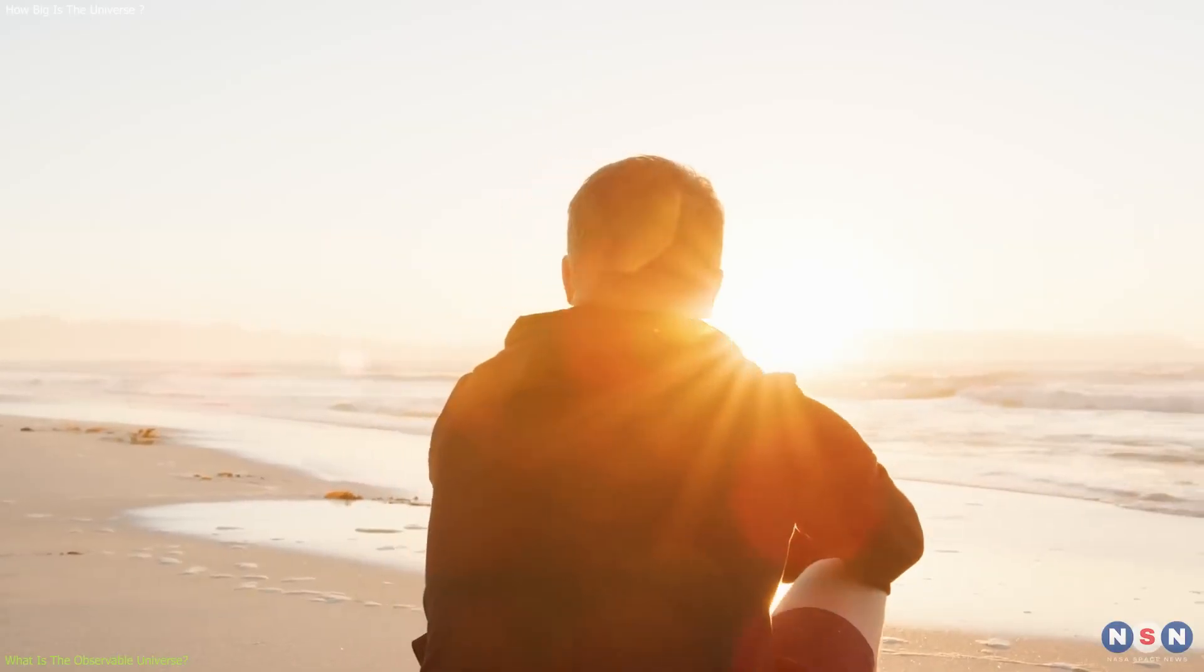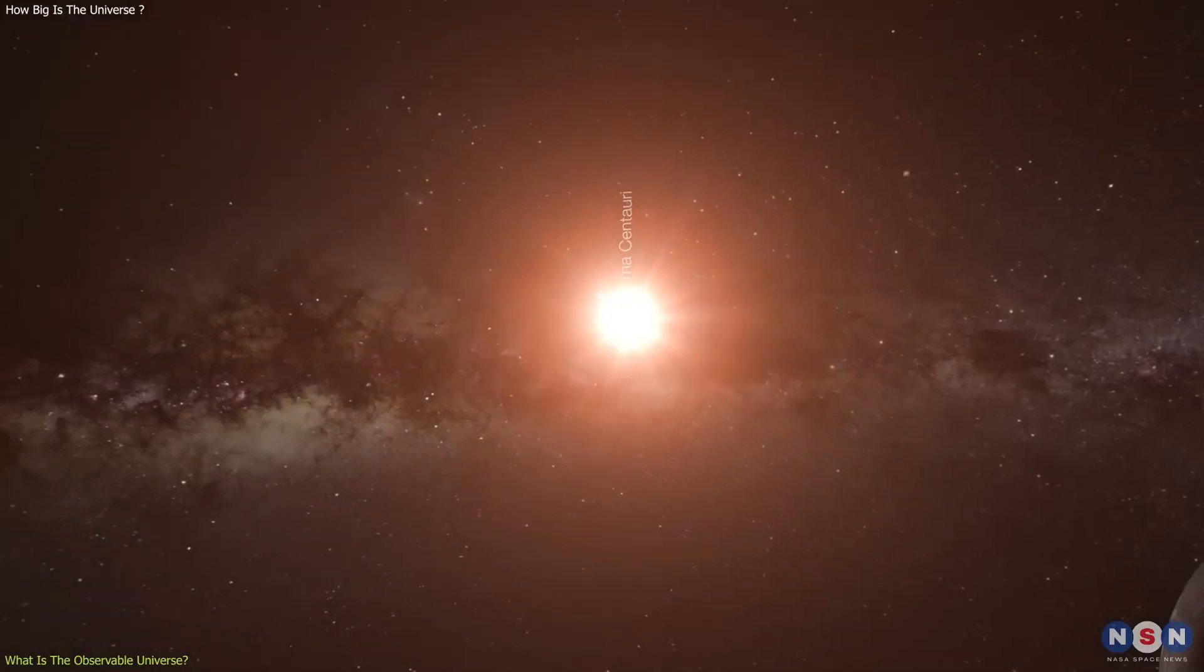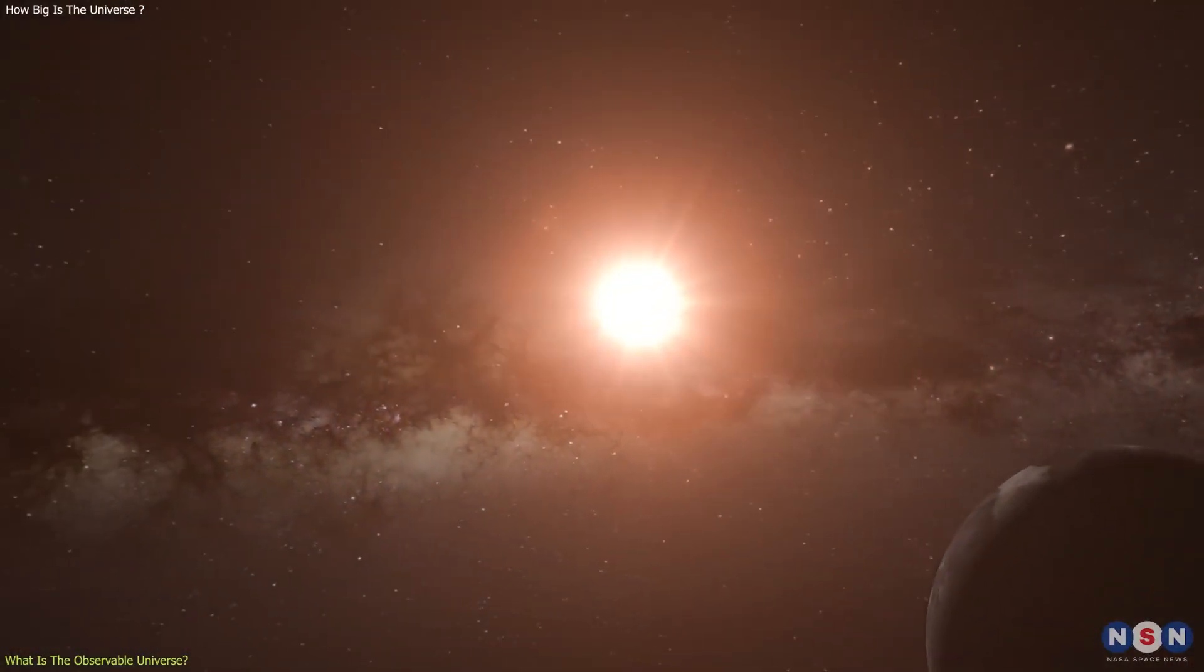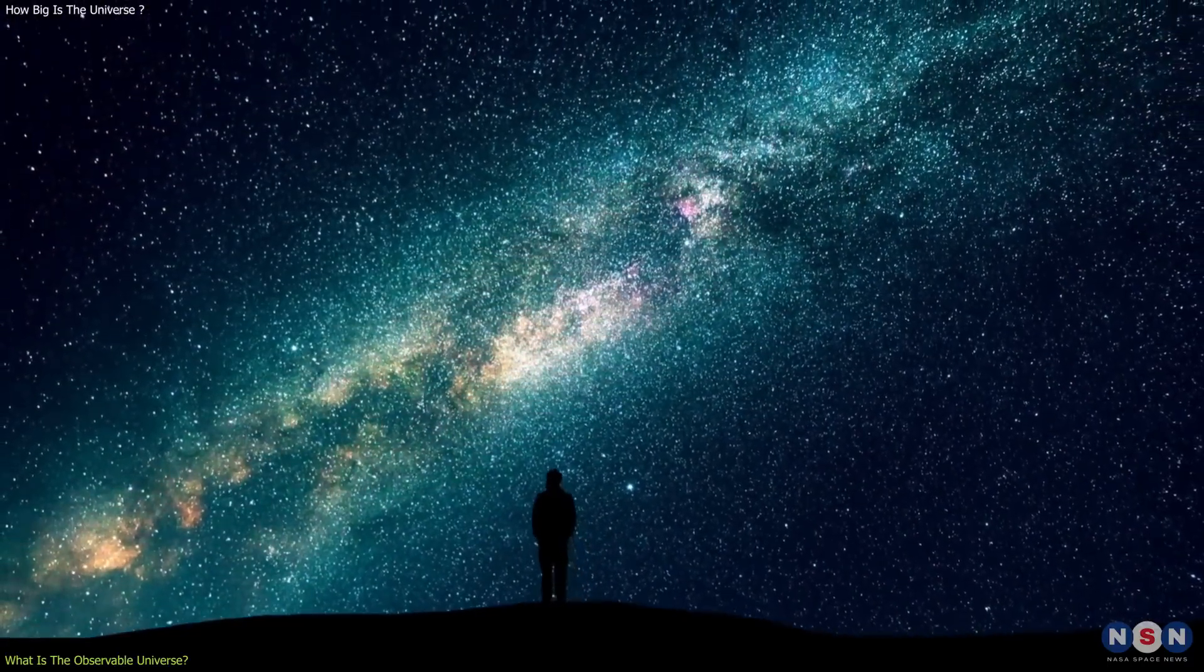So, when we look at the sun, we see it as it was eight minutes ago. And when we look at Proxima Centauri, we see it as it was four years ago. We are always looking at the past when we look at the sky.